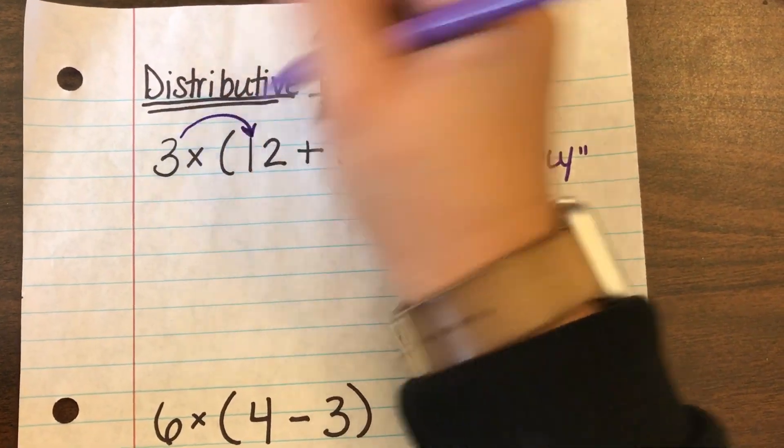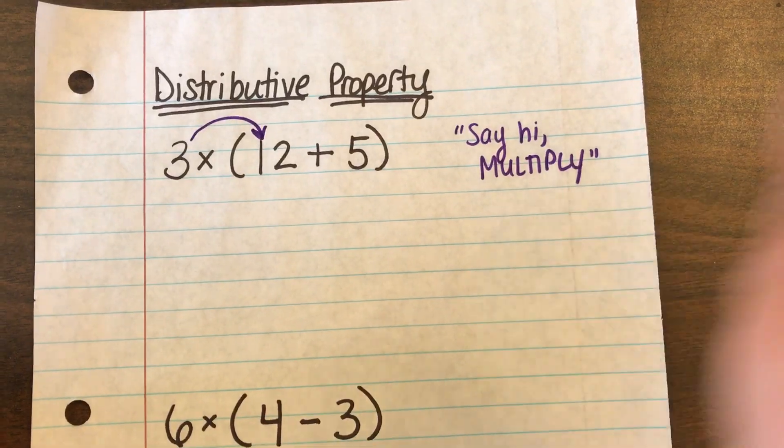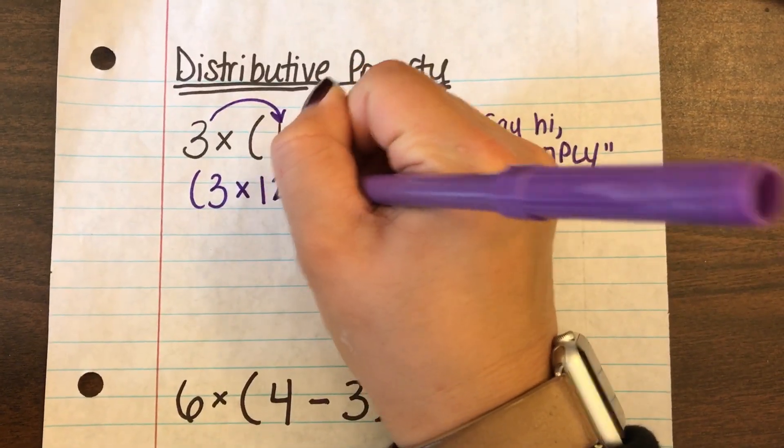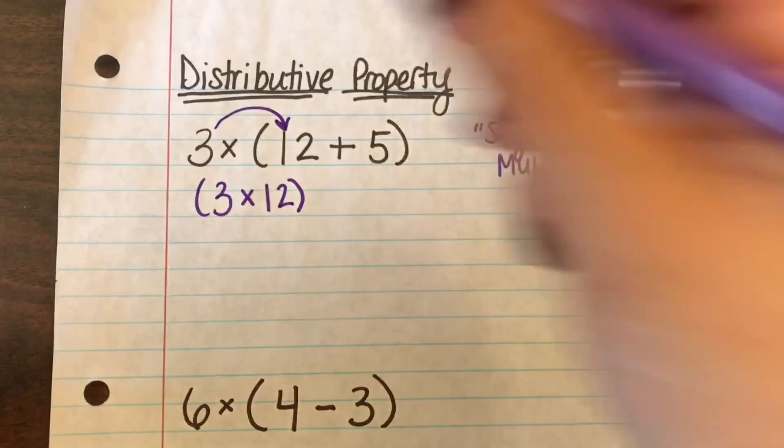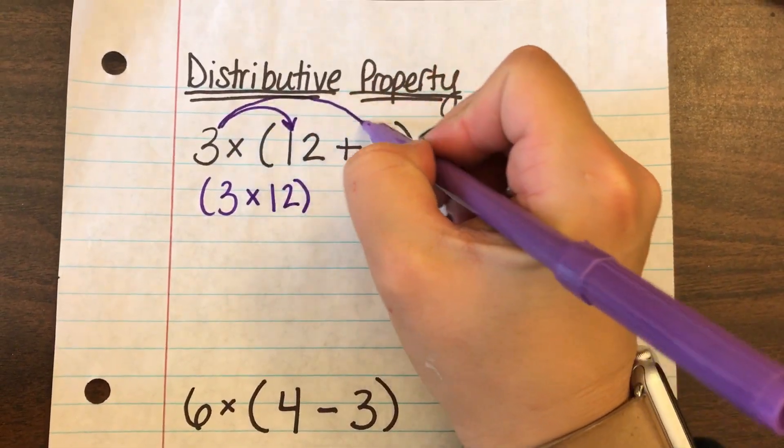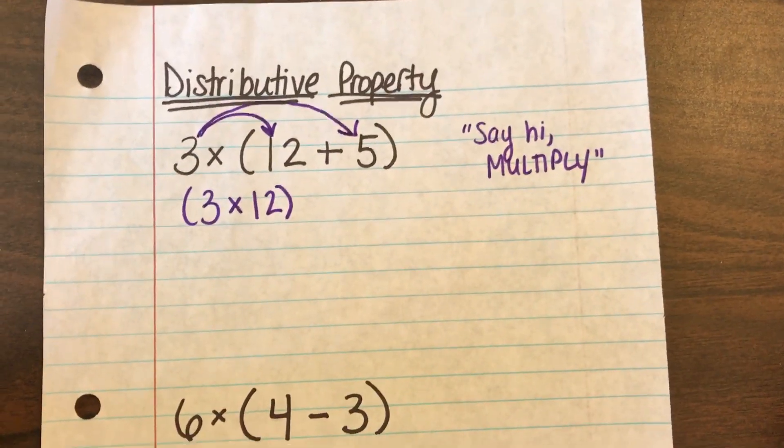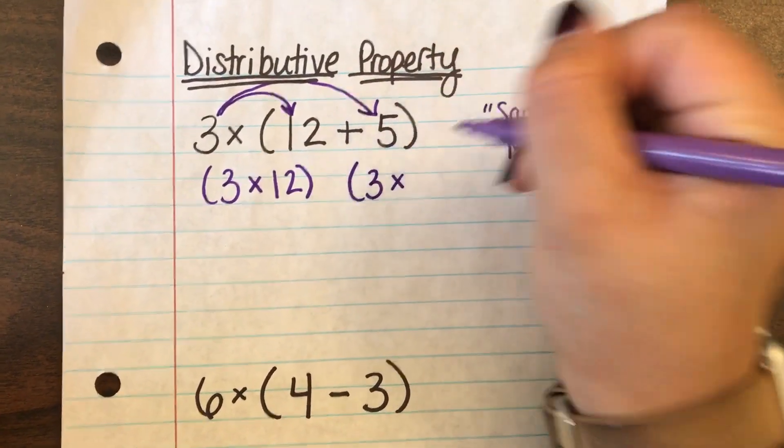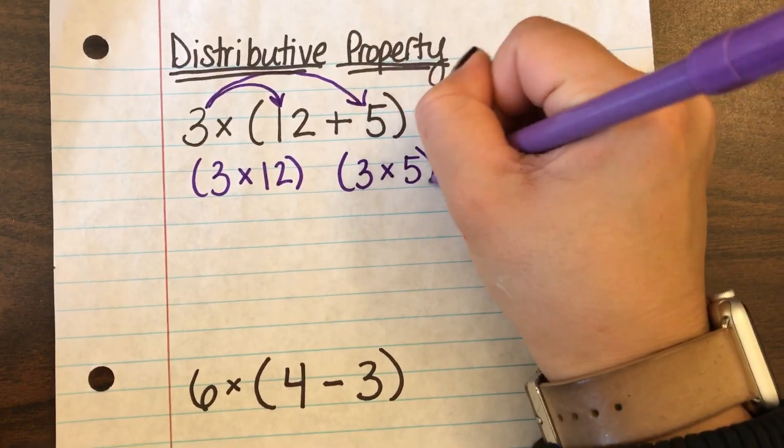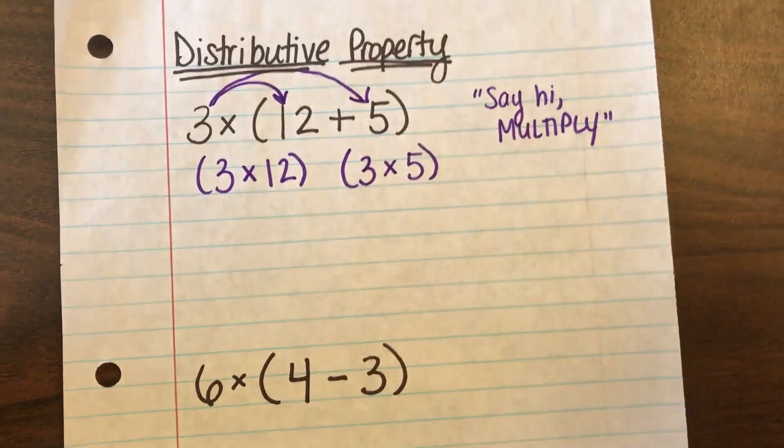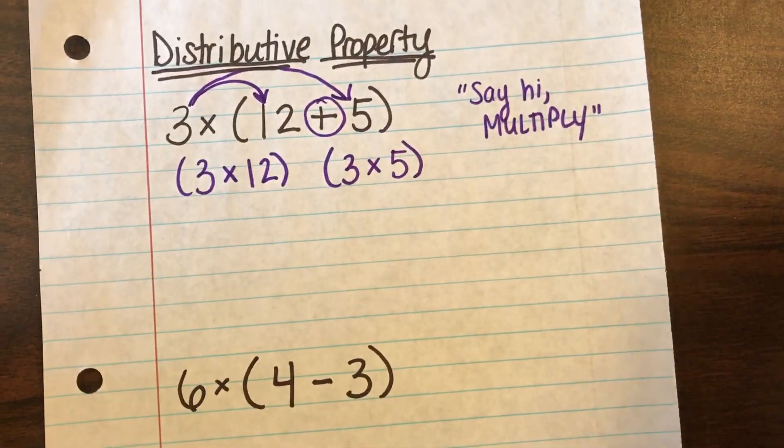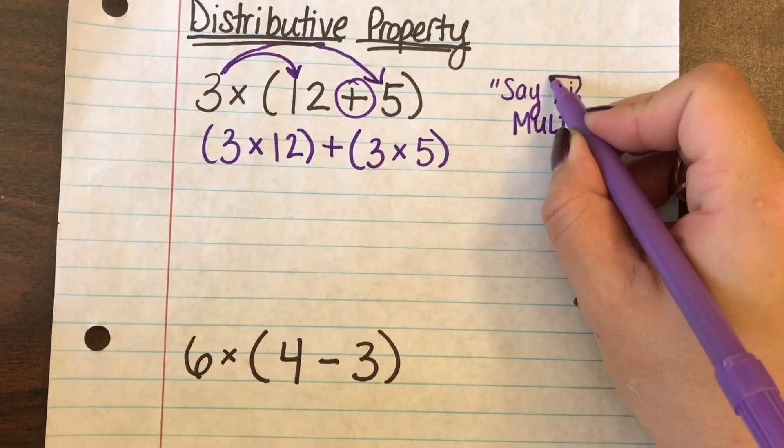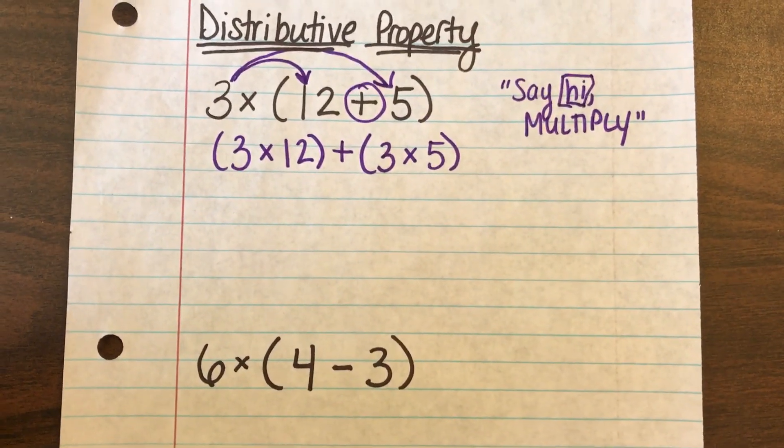So first 3 is going to say hi to 12 and it's going to be say hi multiply 3 times 12. Now 3 also needs to say hi to 5 because 5 is in the parentheses house. So 3 is also going to say hi multiply to the 5. Now there's a plus in the middle so the plus sign is going to go in between and that's going to remind you that it's saying hi because it's positive plus.